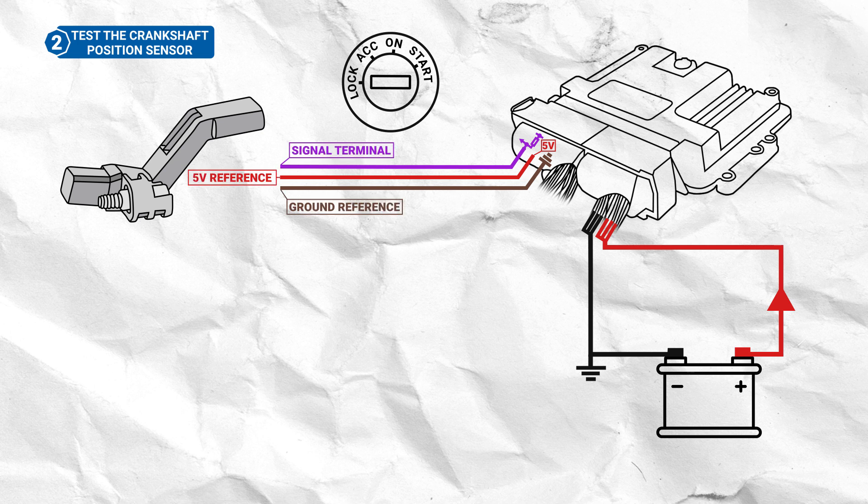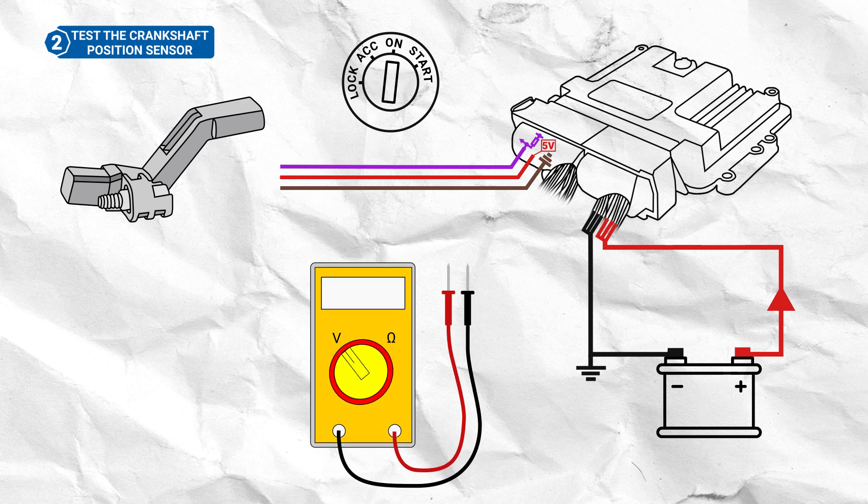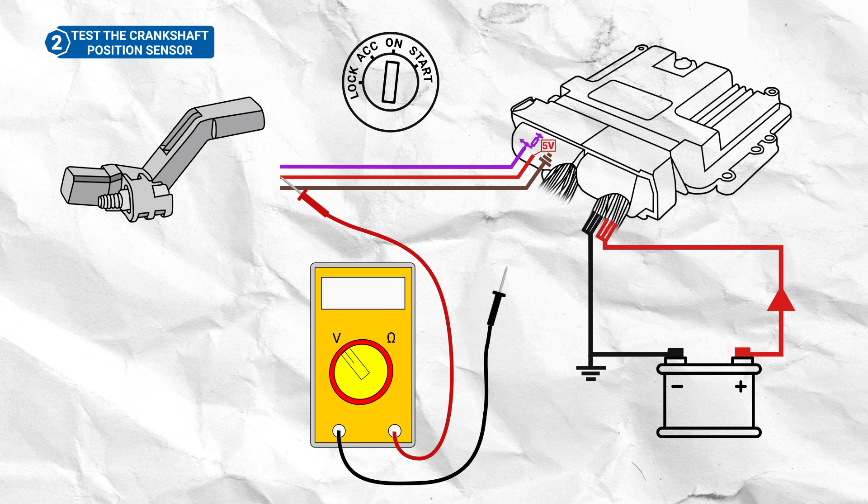Consult your vehicle's repair manual to determine which terminals correspond to the 5 volt supply, ground and signal circuits. Set your multimeter to volts DC, and place the red probe on the 5 volt terminal at the sensors connector, and the black probe on battery negative, and then look at the multimeter, which should read 5 volts.